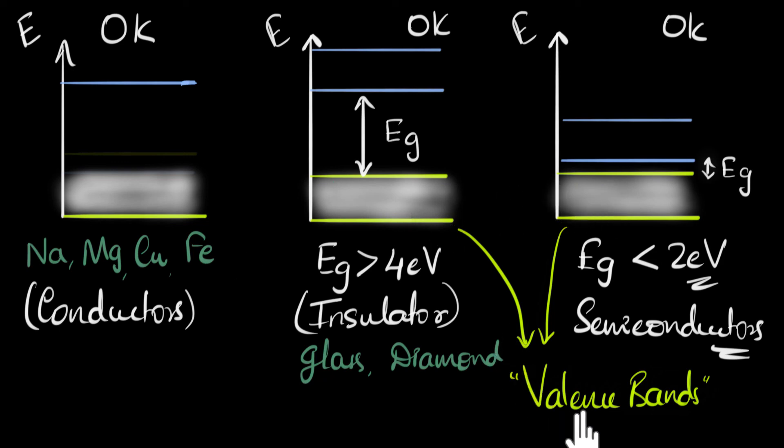And by the way, it's called valence because even in atoms, we have something called valence shells, the final shell which has electrons. The word comes from there itself. And the next higher band in which conduction takes place—I mean, the electrons have to go there to get conduction—we call that as the conduction band. And notice, at zero Kelvin, the conduction band is always empty, completely empty, at least for insulators and semiconductors.